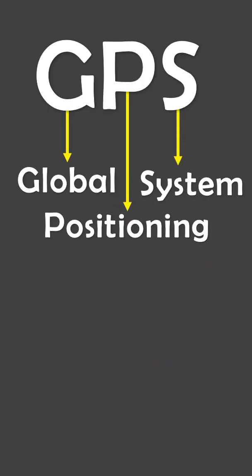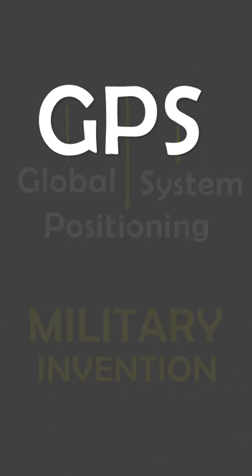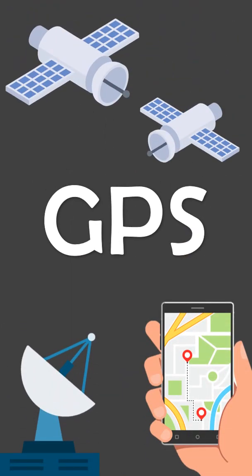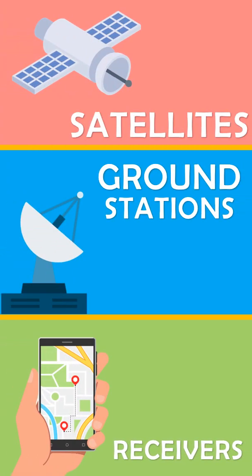GPS stands for Global Positioning System, which is a military invention. It is a network of satellites and receiving devices. GPS is made up of three components: satellites, ground stations, and receivers.